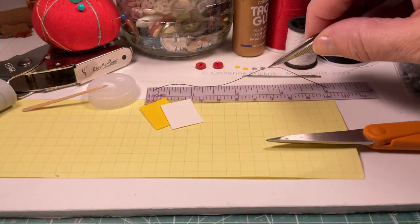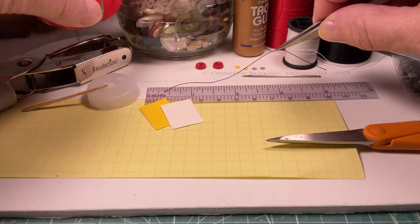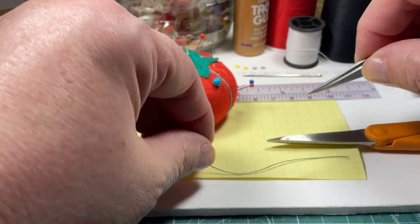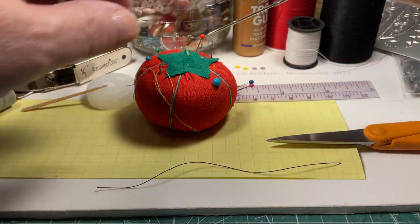Cut a two and a half inch to three inch length from any color of all-purpose thread like cotton or polyester blends.